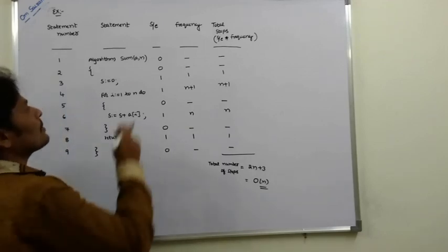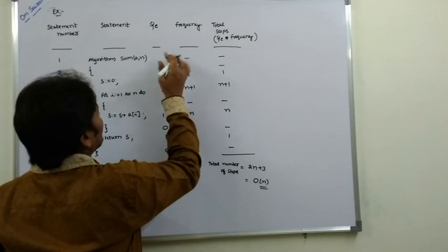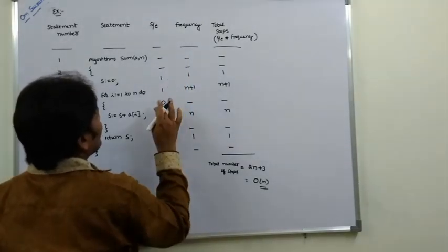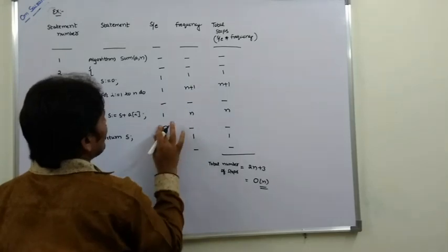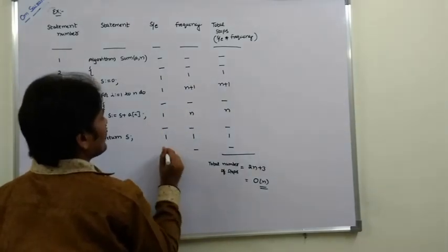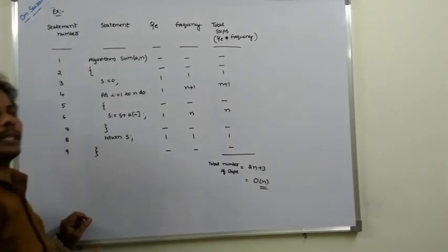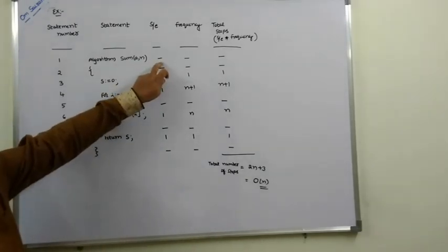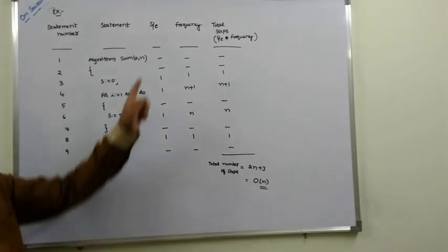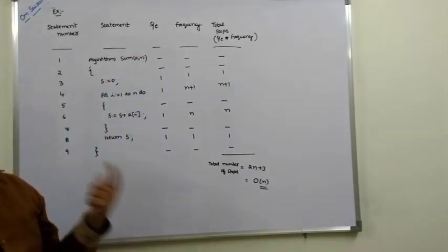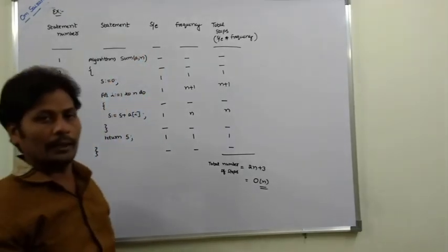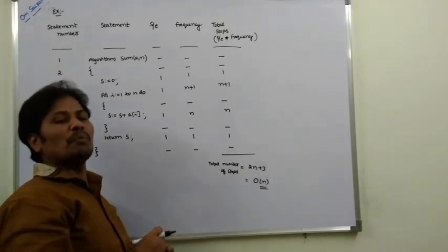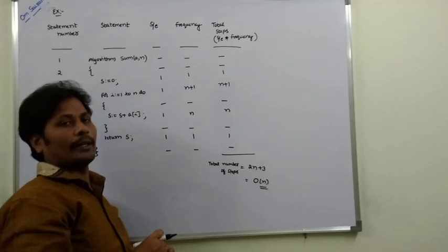Sometimes the non-executable statements can be written as 'not 0' or represented as 0 — both notations are correct for non-executable statements like algorithm headers and braces. There is no wrong in either representation.